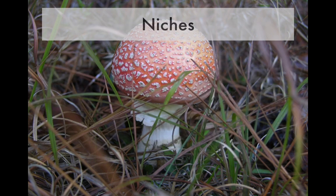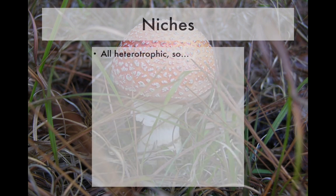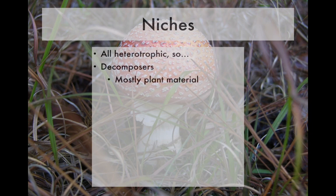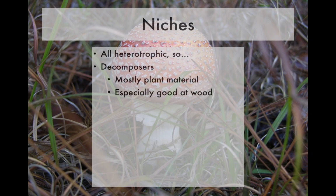All fungi are heterotrophic, as are all members of the Uniconta, so they cannot photosynthesize on their own — they need other organisms to feed upon. Fungi are most famous for being decomposers, breaking down mainly plant material. They're not as effective at breaking down animal tissue, but they're really good at breaking down wood. Lignin and cellulose are very recalcitrant polymers, but fungi have the enzymes in their toolboxes to degrade them.